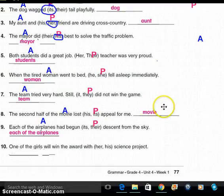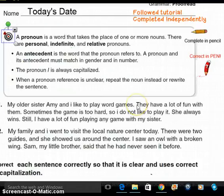Last one. One of the girls will win the award with his or her science project. Well, if it's one of the girls, it's got to be her. It's antecedent's one of the girls. That's what it's referring to, you think? One of the girls. How'd you do? All right. Let's go ahead and let's get ready to go to the next lesson. And we'll be ready.